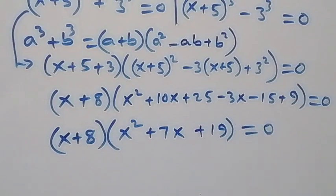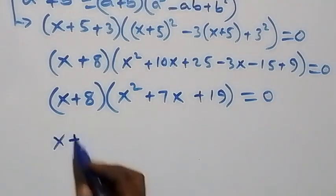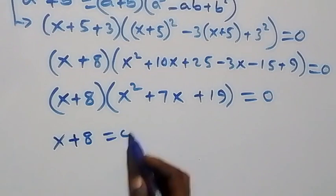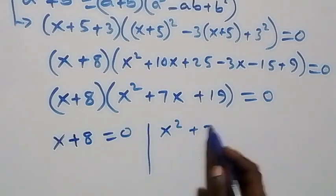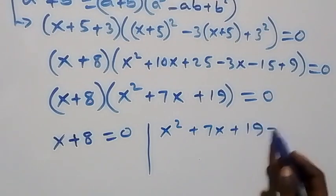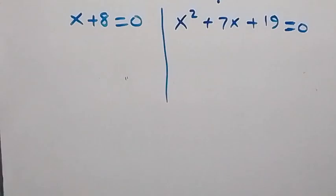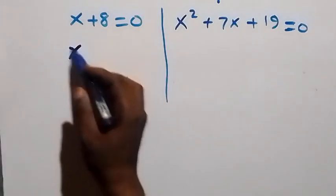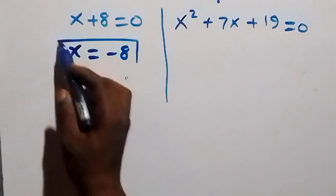Setting each factor to zero gives two cases: x plus 8 equals 0, or x squared plus 7x plus 19 equals 0. From the first case we get x equals minus 8, which is a real solution.